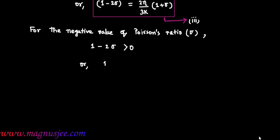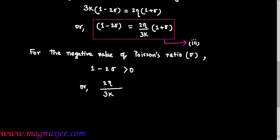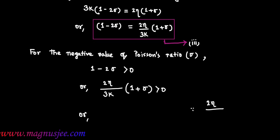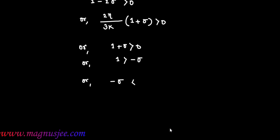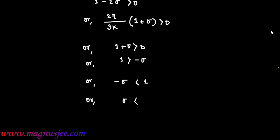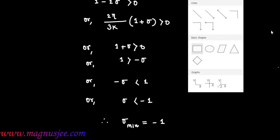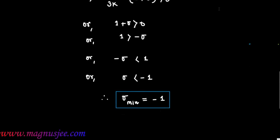That means 1 minus 2 sigma is always positive, i.e., greater than 0. Substituting from equation 3, 2 eta divided by 3K into (1 plus sigma) is greater than 0, which gives 1 plus sigma greater than 0, or sigma greater than minus 1. Therefore, the minimum value of sigma equals minus 1.